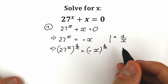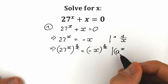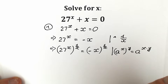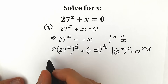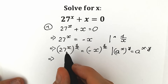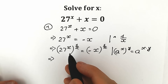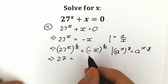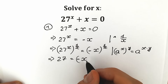Now let's remember a great power rule: when we have a to the power x raised to the power y, we can write it as a to the power x times y. So we multiply x times 1 over x, which equals 1, and we can cancel those. As a result, we have 27 equal to minus x to the power 1 over x.